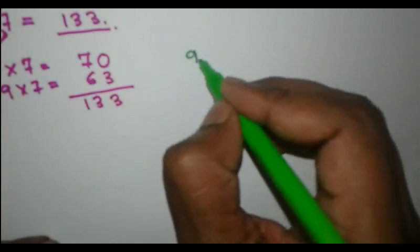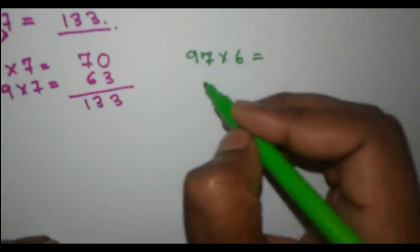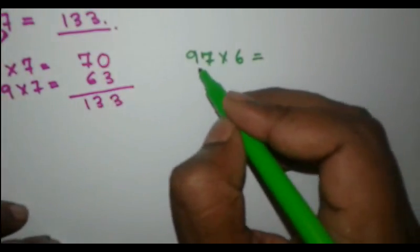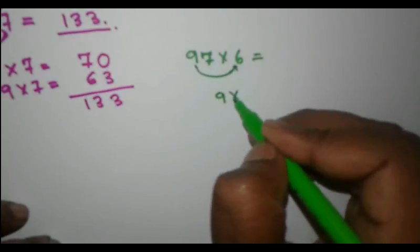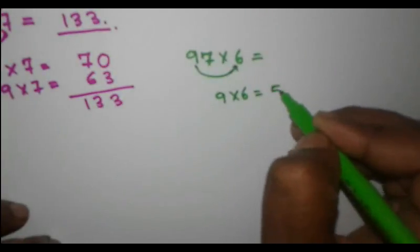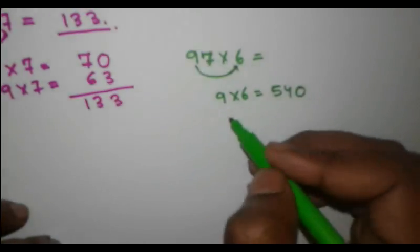Look at 97 into 6, what will be the answer? Now what we will do, we will multiply 9 into 6. 9 into 6 is equal to 54, and we will add a 0 from our side. Next,